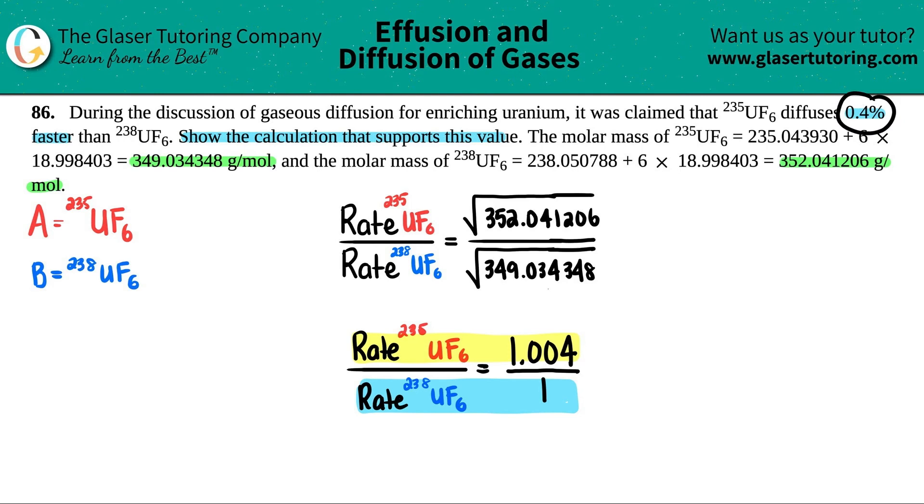But now if we want to express it as a percent, we would have to see what is the difference between the two of these. Well, this is 1.004, this is 1.000. So if we just subtract them, that's where we get the 0.004. And now if we wanted to just make it as a percentage, remember, all we have to do is just take that number and times it by 100%. And that's where you get 0.04%.